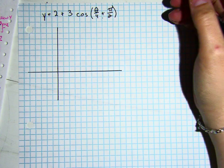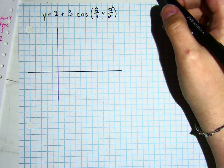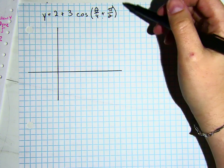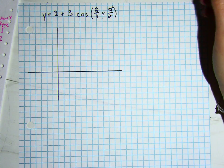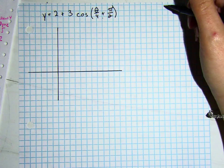To graph y equals 2 plus 3 cosine of the quantity theta divided by 4 plus pi over 2, the first thing we need to do is talk about the transformations that are taking place on this function.